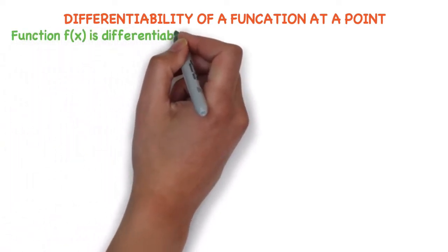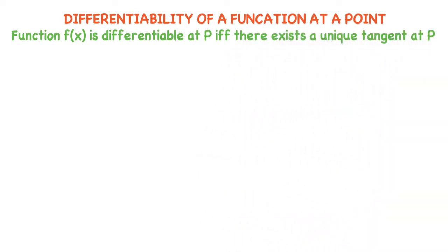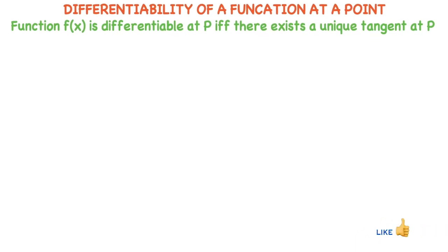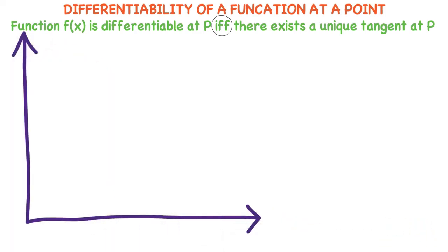Function f is differentiable at p if and only if there exists a unique tangent to the curve f at p. Throughout this class, I am going to discuss this point only: when a function is differentiable at p, there exists a unique tangent to the curve at point p. Then f(x) is a differentiable function. This is an if-and-only-if condition.